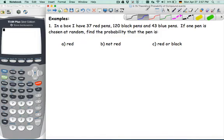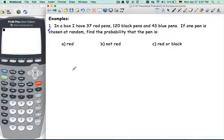Alright, now we're on to day five. We're looking at theoretical probability of compound events. So we'll just get right into some examples.